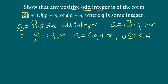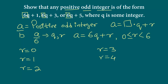Now let's find out what the possible values of r are and rewrite a accordingly. r can be 0, 1, 2, 3, 4, or 5. r cannot be 6 because it must be less than 6.